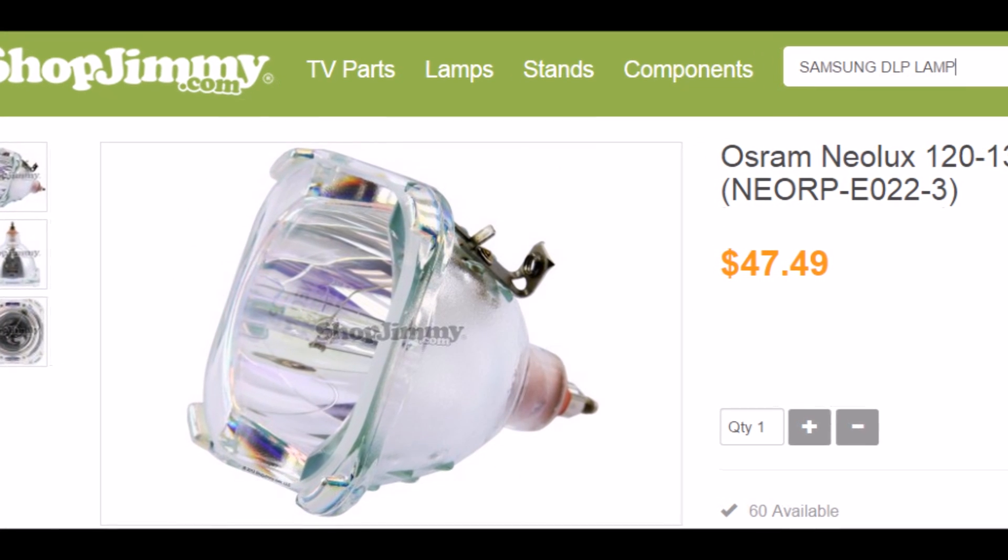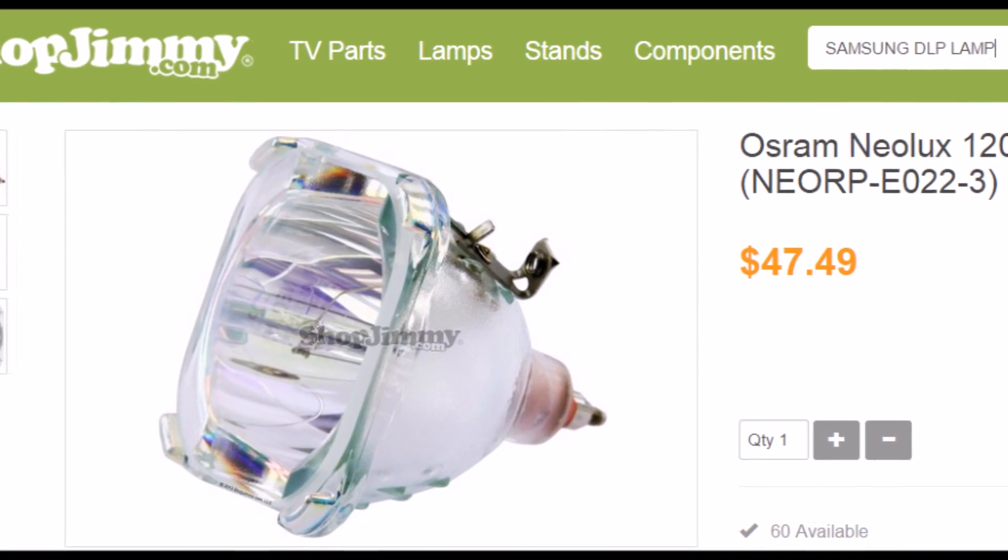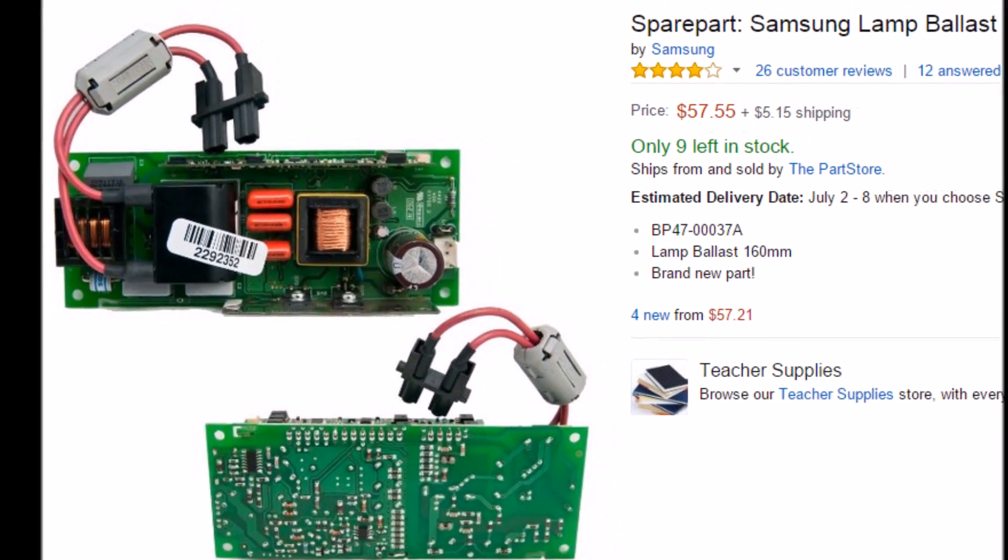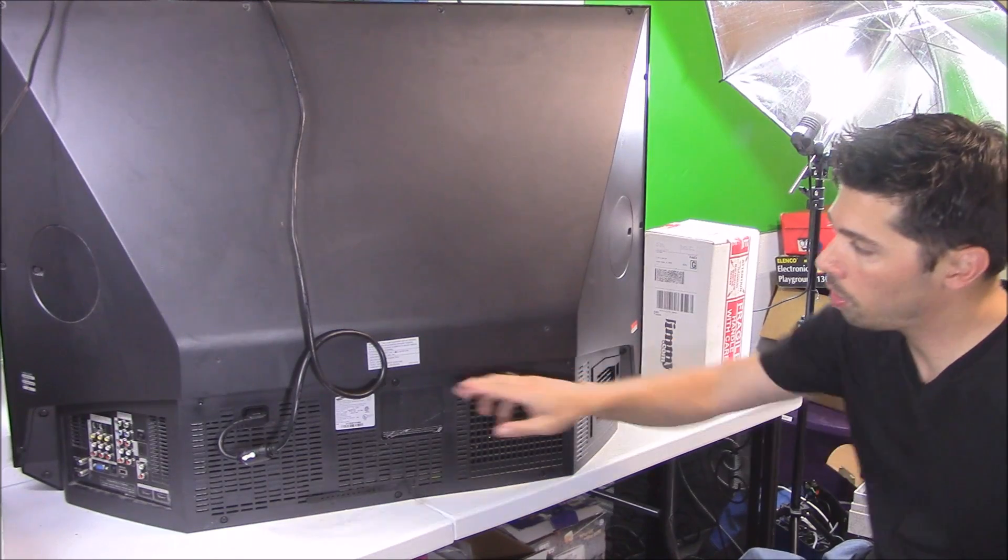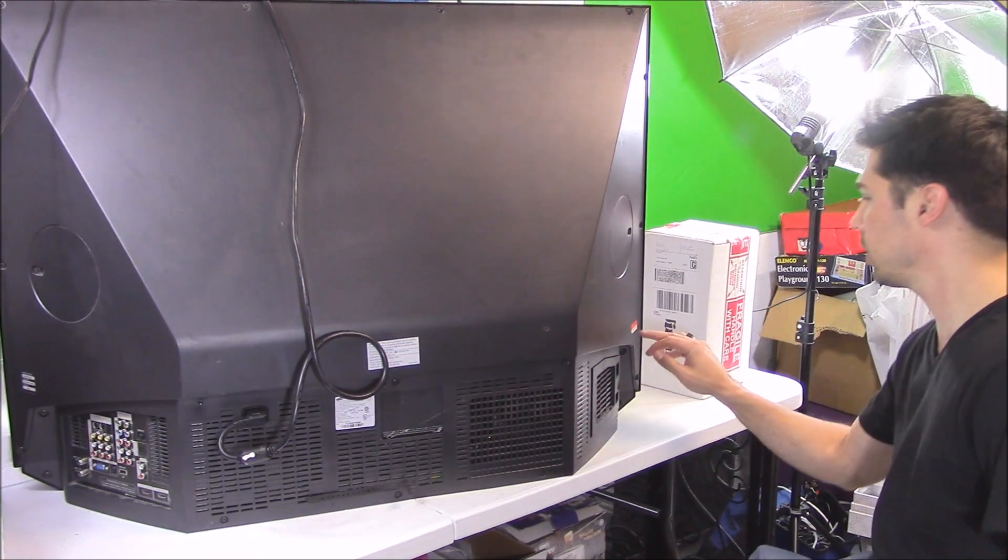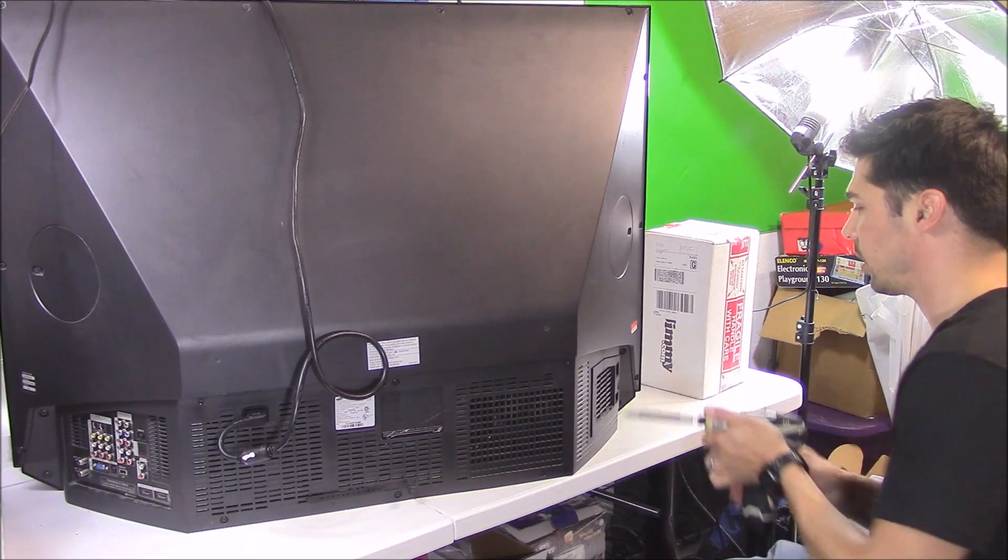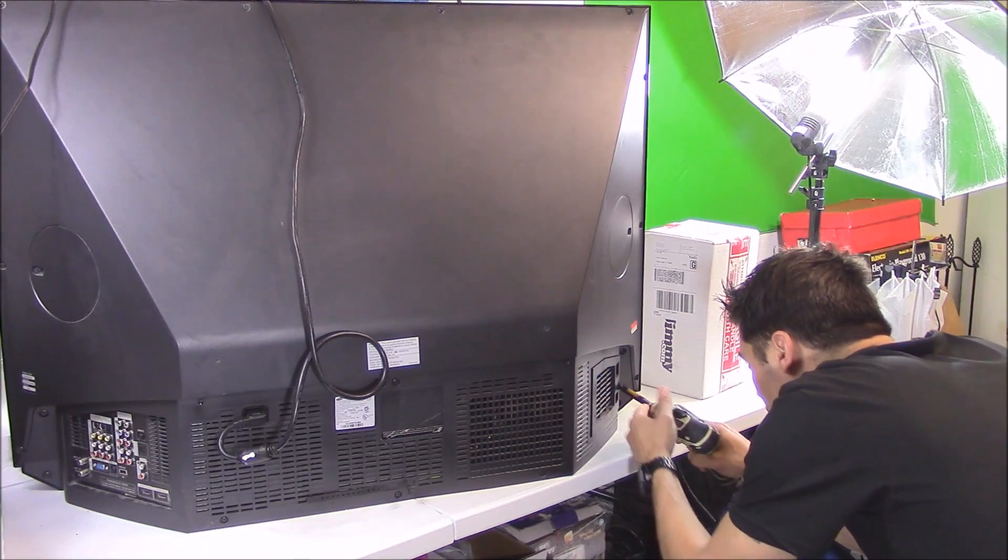So what I end up doing is I order the lamp. If the lamp does not fix the TV, then I order the ballast. I ordered the lamp. There's a lamp code right here, or you can go off the model number on the TV. But usually there's a lamp code red sticker on the side.